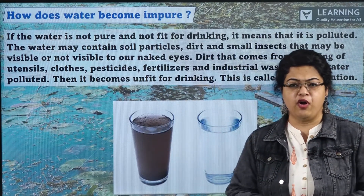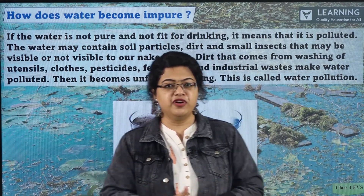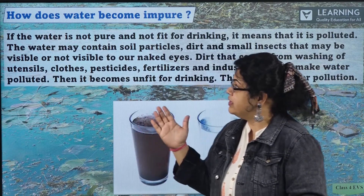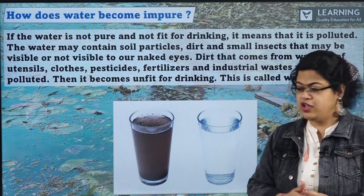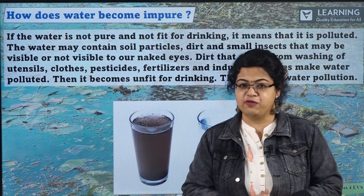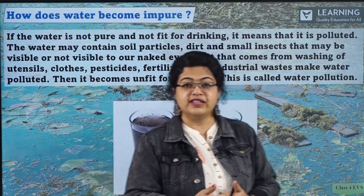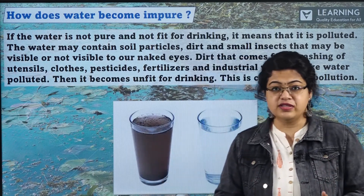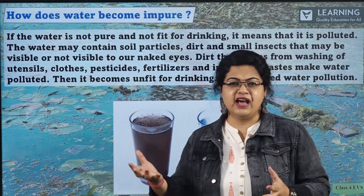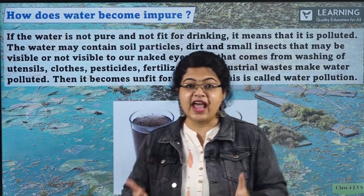How does water become impure? We always say, don't drink this water — it's impure, it's not fit for drinking. Why is that so? It is because the water is not pure and not fit for drinking. You must be seeing some black or brown colored water. How can we know that the water is polluted? It is because the water has some dirt, soil, or any other solid thing that floats on water. It can also have germs in it — that is contaminated water.